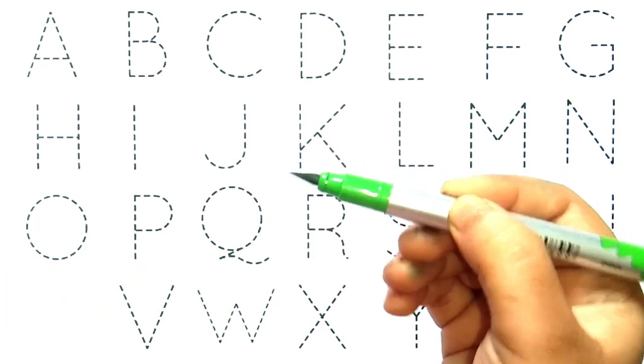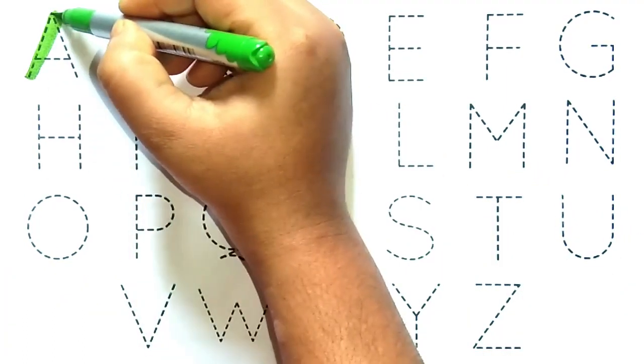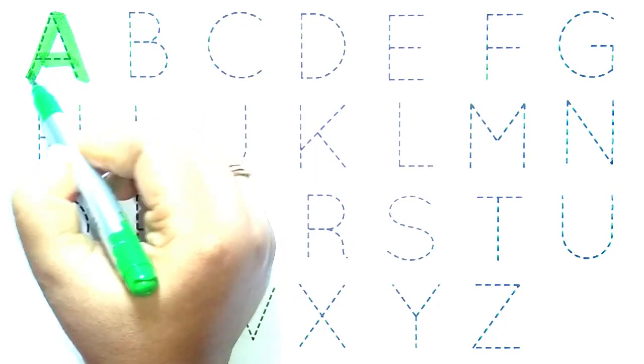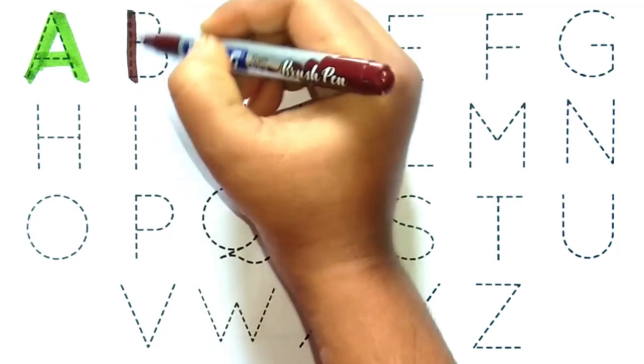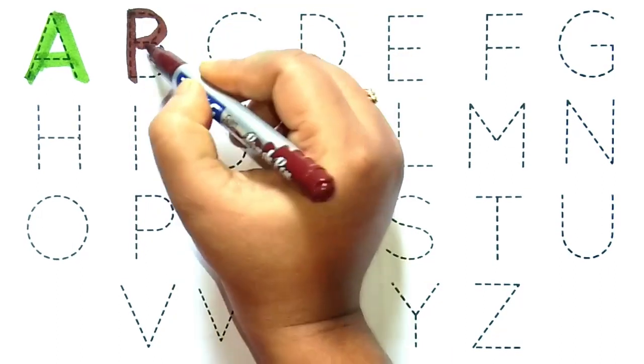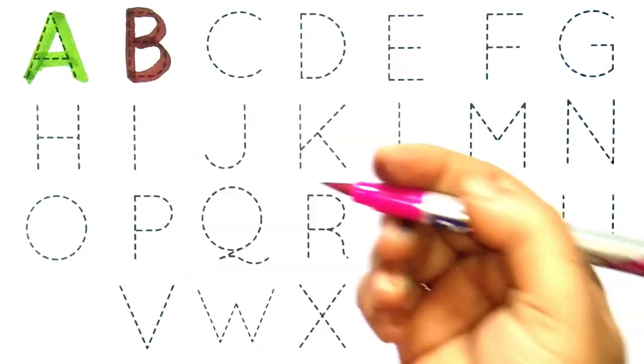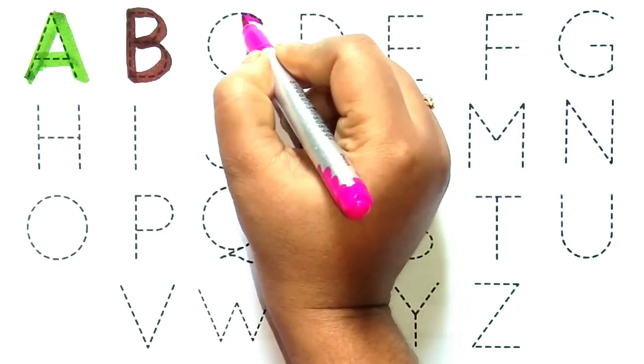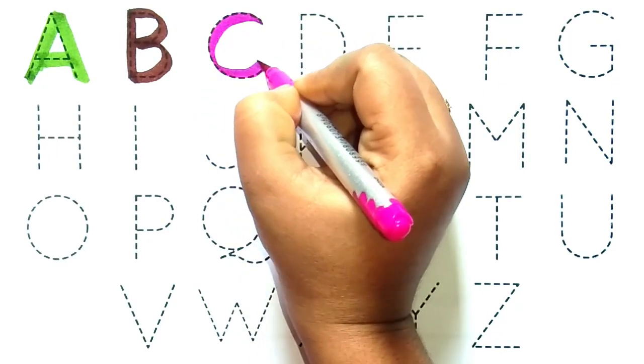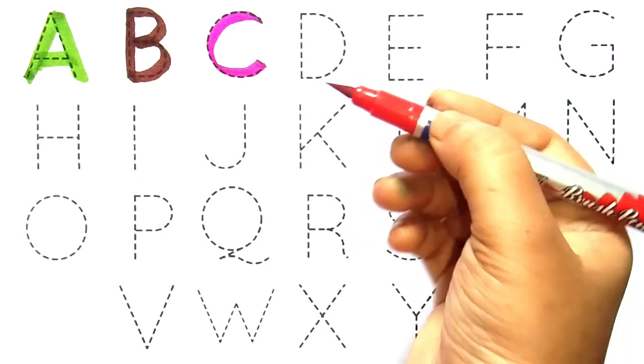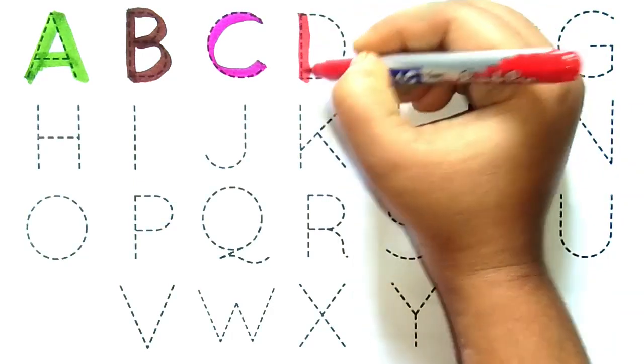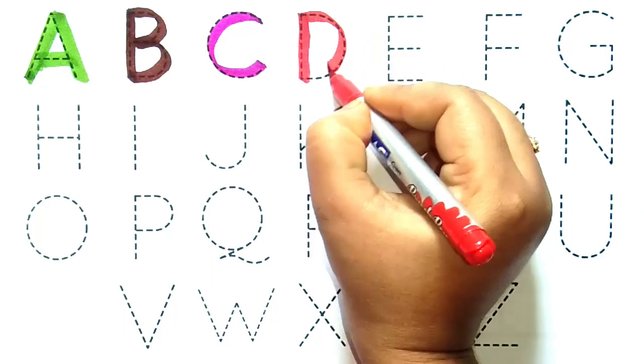Light green color A. A for apple. Brown color B. B for board. Pink color C. C for cat. Red color D. D for doll.